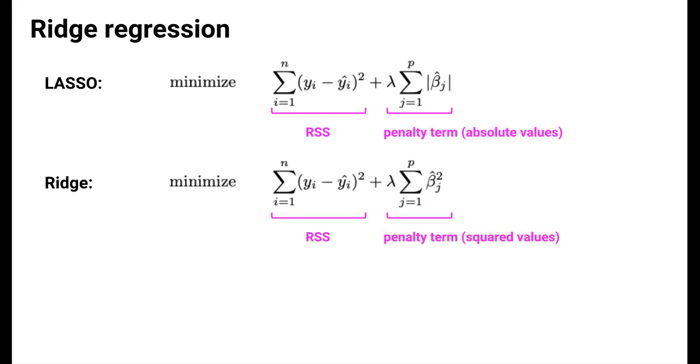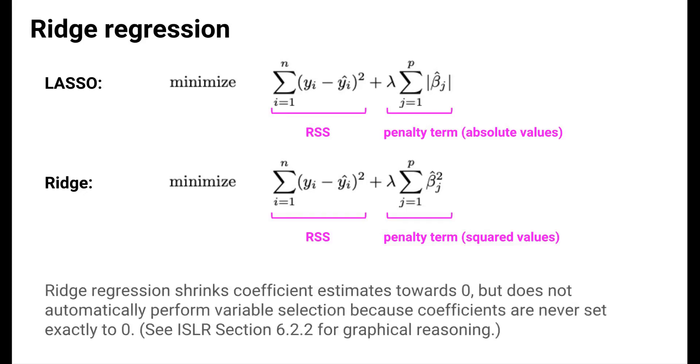So we'll pause our discussion of LASSO there, but just a quick note on ridge regression, which we mentioned earlier was another shrinkage method. With LASSO, we modified the least squares criterion from linear regression by adding a penalty term that contained absolute values of the estimated coefficients. With ridge regression, we also use a penalized version of the sum of squared residuals, but this time we use the squared values of the coefficients in the penalty term rather than absolute values. With ridge regression, the concepts are the same as with LASSO. Ridge regression shrinks coefficient estimates towards 0 because of this penalty term, but it does not automatically perform variable selection because coefficients are never set exactly to 0. We won't get into why this is the case here, but there is a nice graphical explanation in the ISLR book.